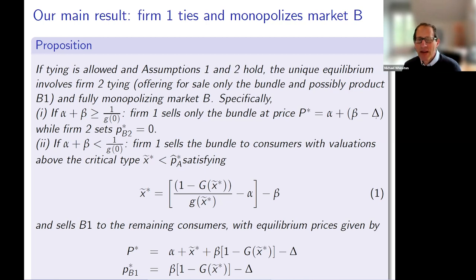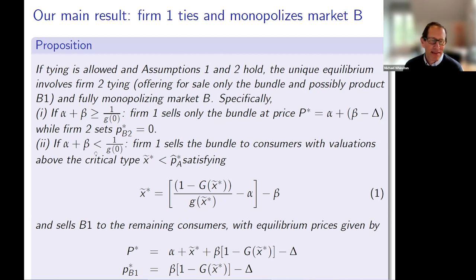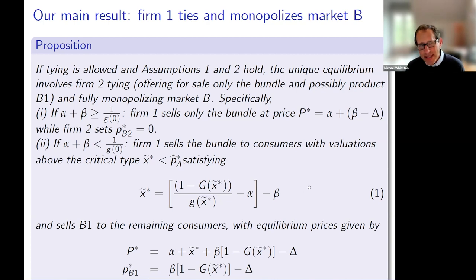That first case always holds when we have full coverage with independent pricing in market A. The second case is the converse. In that case, firm one actually sells both a bundle and product B1 separately: it sells the bundle to high enough value consumers — those with a type above some critical type X-tilde-star given by equation one — and sells B1 to lower-value consumers. Again, it monopolizes market B. So that's the main result.